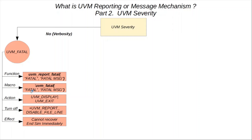We can also use a macro instead of the function. The macro also takes the message ID and message body as the two required arguments. The main advantage of using the macro is that the file name and line number are already included by default, which aids in debugging. A UVM_FATAL call performs two actions: UVM_DISPLAY, which logs the message, and UVM_EXIT, which ends the simulation when a fatal error is encountered.